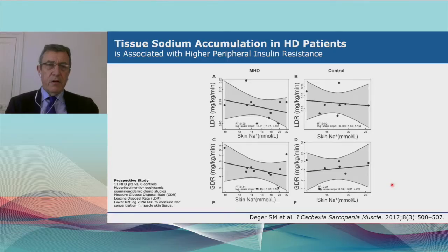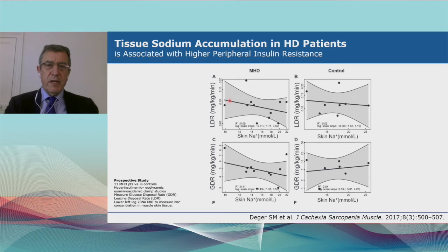Second, a study in hemodialysis patients looking at peripheral insulin resistance using euglycemic clamps shows an inverse relationship between insulin resistance and sodium content in the skin. So insulin resistance may be driven by salt accumulation in the skin.